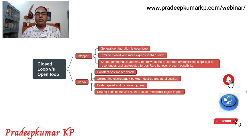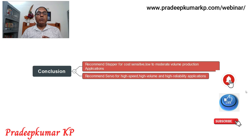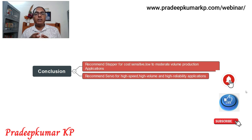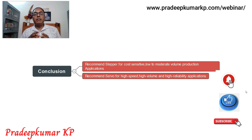As a conclusion: stepper is better for cost-sensitive applications where a lower-price machine is needed. You can go for a stepper-type CNC router, but you can expect only low to moderate volume production capacity with the stepper motor.